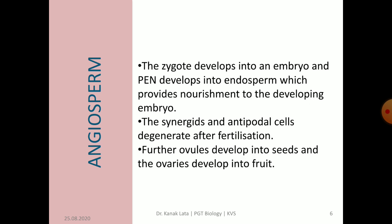After fertilization of male and female gametes, it results in a diploid zygote that develops into an embryo. The primary endosperm nucleus develops into endosperm, and this endosperm provides nourishment to the developing embryo. After fertilization, synergids and antipodal cells degenerate. Meanwhile, the ovule develops into seeds and the ovary develops into fruits.